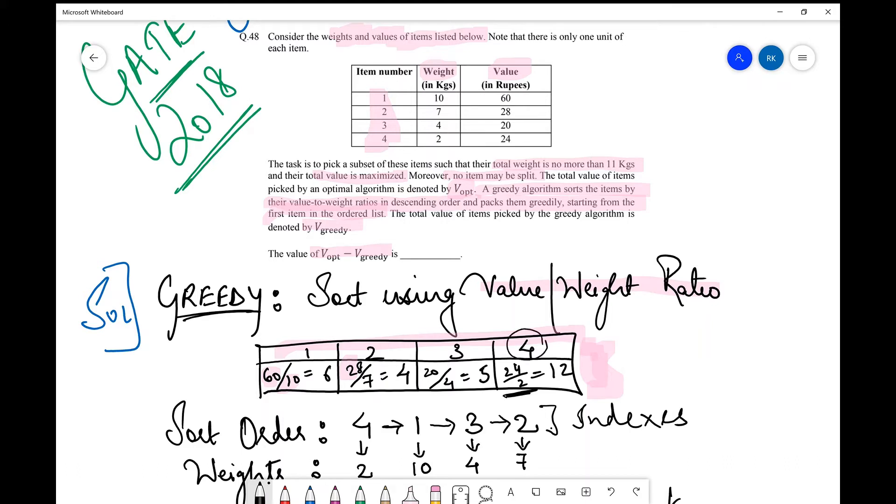So for example over here the maximum value that I'm getting for value to weight ratio is this one which is for the fourth item. Also they've specified that you need to sort that in descending order. So that is why I have taken fourth. I have sorted that in descending order. So I've taken fourth item over here first at the first position. Then obviously the next item is this which is having the value to weight ratio value as 6. So the first item next and then the third item and then finally the second item.